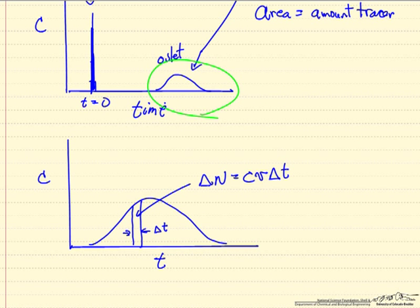So I'm going to take this part and blow it up to create the view here. And then if we look at some small time difference, this area, that's ΔN, where N is the number of moles of the tracer. Concentration times the total volumetric flow rate through the reactor, and this is the time interval that we picked. The amount that we injected, we could call that N₀.